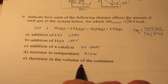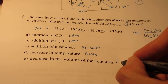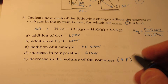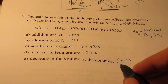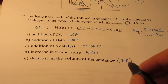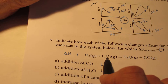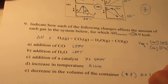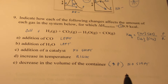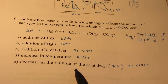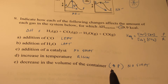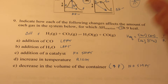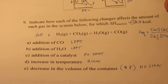If I decrease the volume of the container, that's the same as increasing the pressure. Increasing the pressure will favor the side with fewer moles of gas. On this reaction, I have two moles of gases on the left and two moles of gases on the right, so as a result there's no shift this time. Remember: increasing pressure or decreasing volume favors the side with fewer moles of gas. Conversely, increasing the volume or decreasing the pressure would favor the side with more moles of gas.